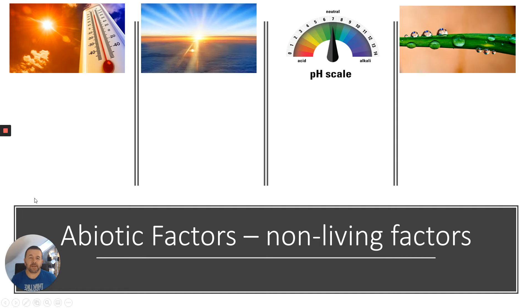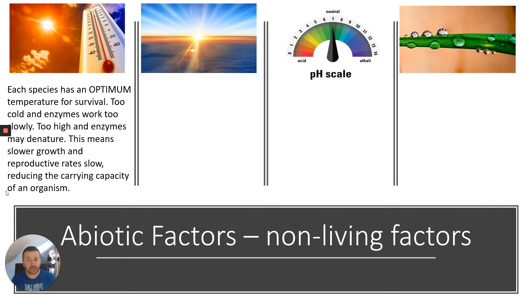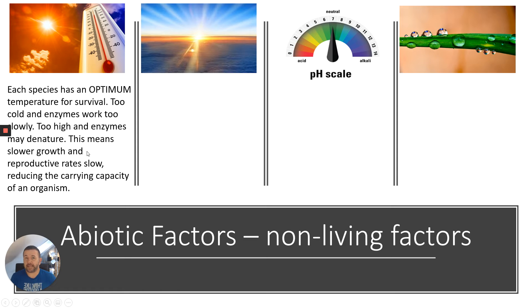Abiotic factors are the non-living factors of the environment that affect the growth or reproduction of a population. First, temperature: each species has an optimum temperature for survival. If it's too cold, enzymes work too slowly and growth may be very slow. If temperature is too high, enzymes could be denatured, slowing or even stopping growth, reducing reproductive rates and reducing carrying capacity — unless kept within levels the organism can survive in depending on its adaptations.